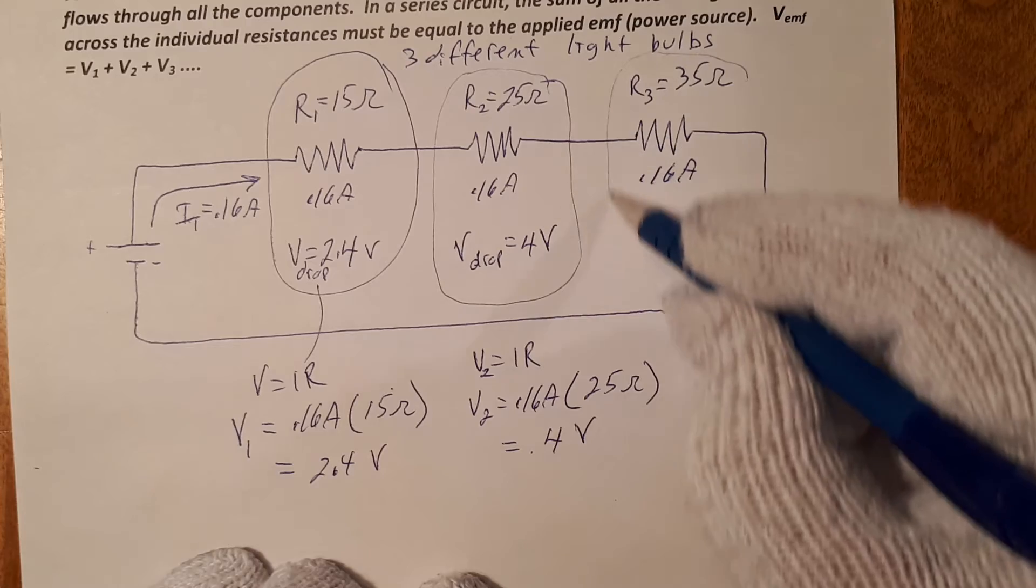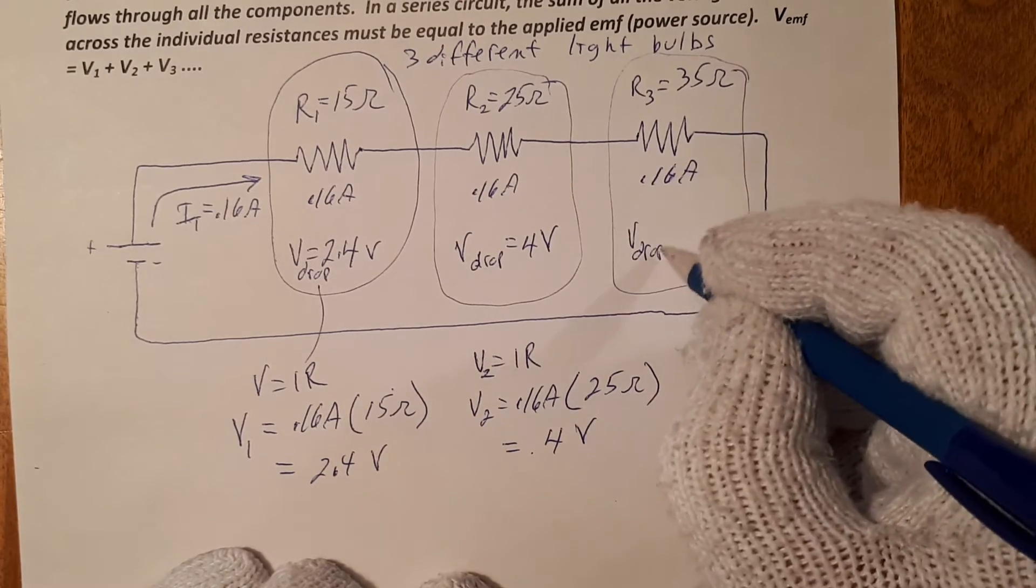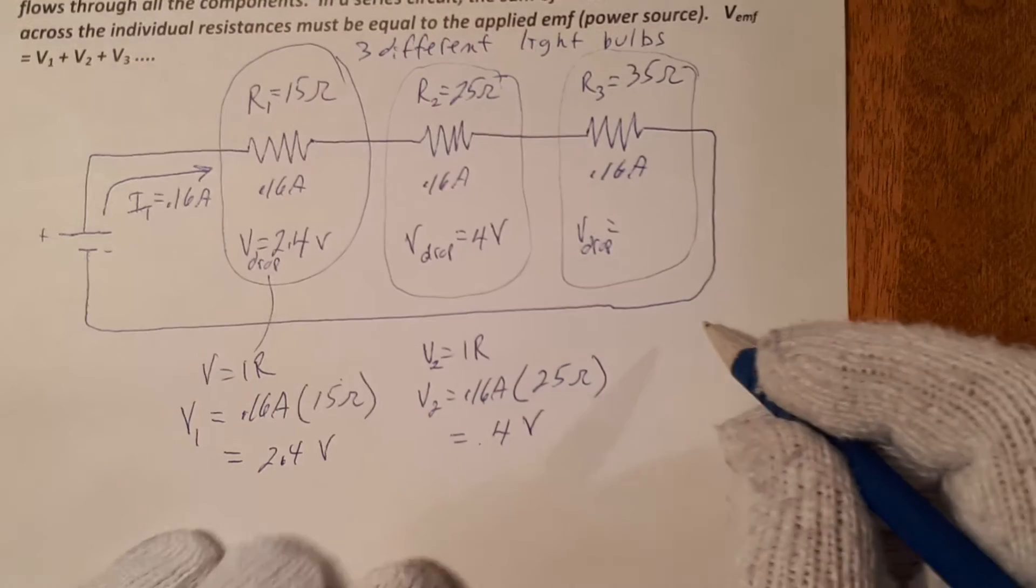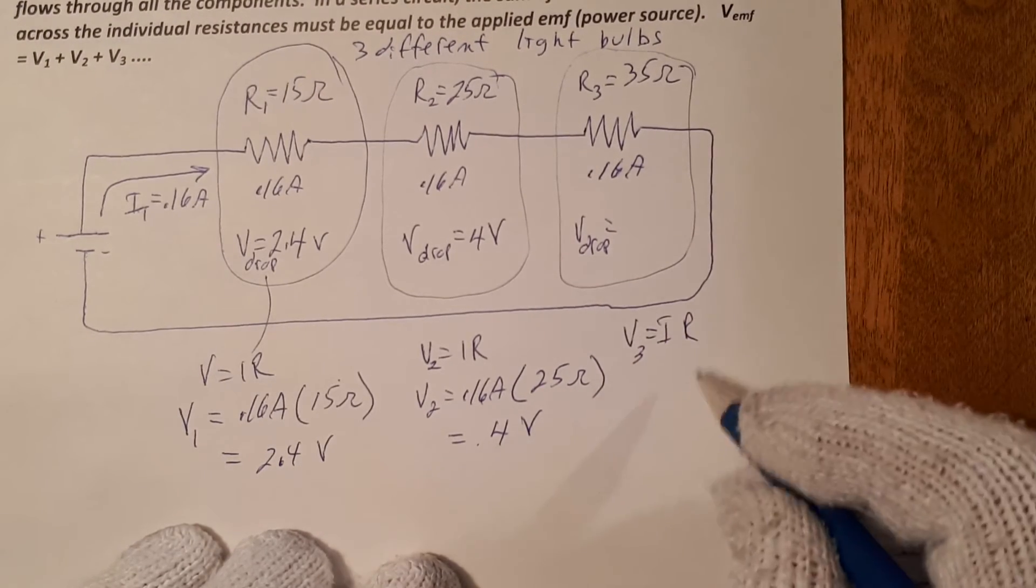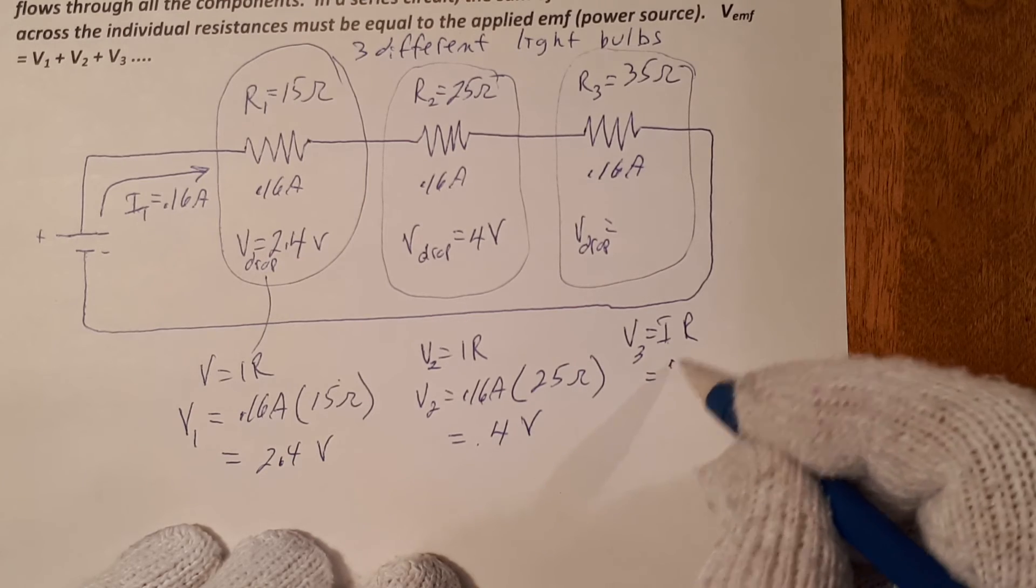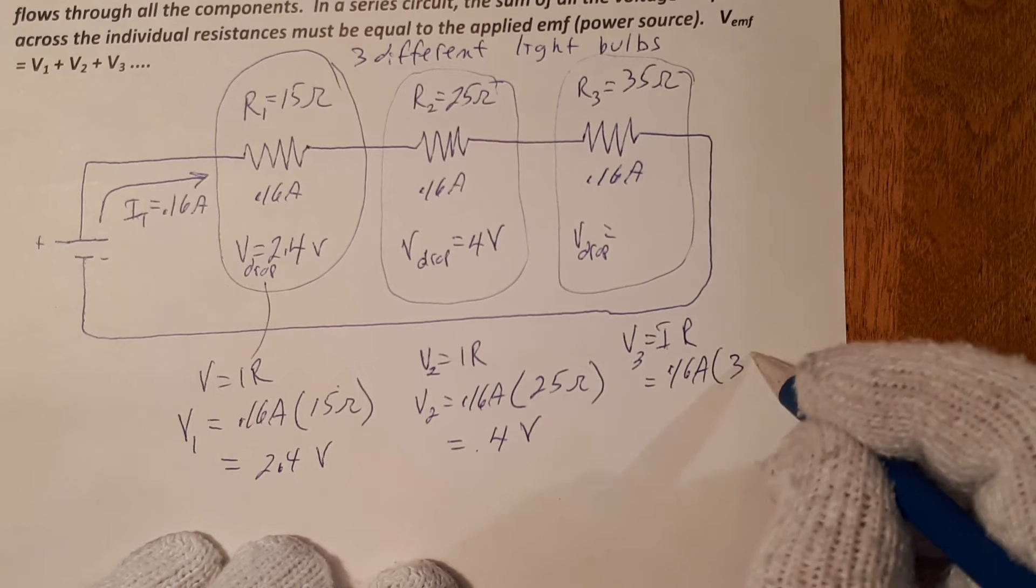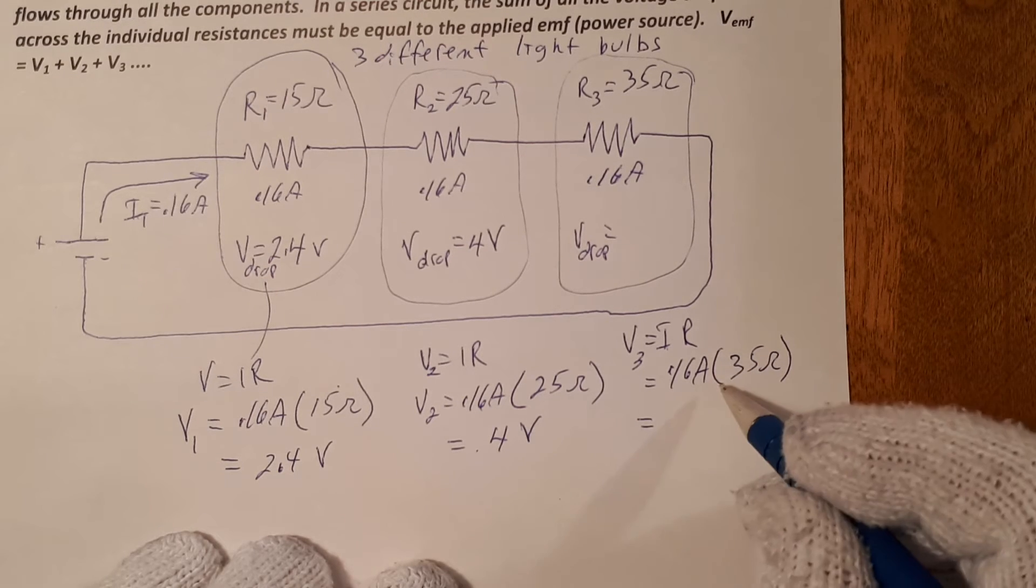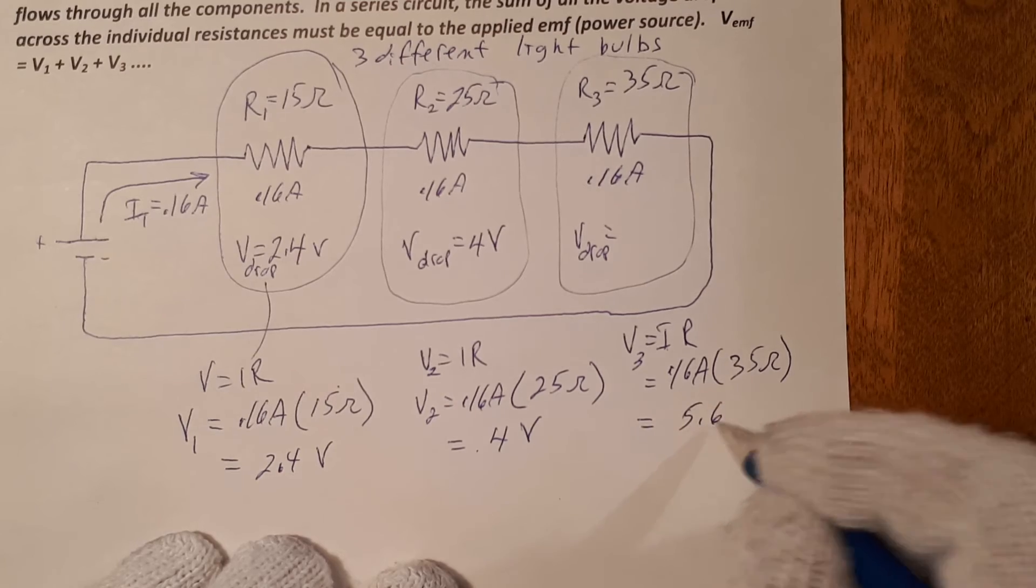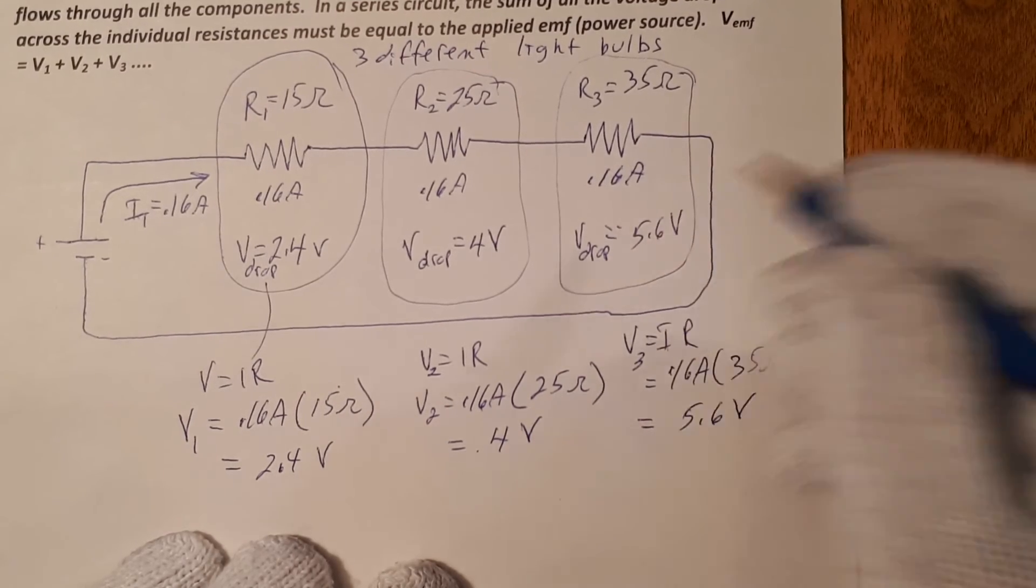And similarly for this last one, we're going to find the voltage drop. Again using Ohm's law, V3 is equal to IR. Same current throughout, and the resistance is 35, is equal to 5.6 volts. Voltage drop here is 5.6 volts. So each one of these light bulbs uses a different amount of voltage.